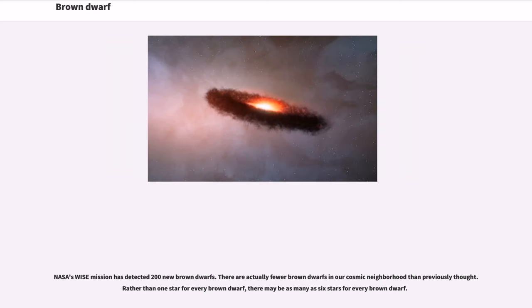NASA's WISE mission has detected 200 new brown dwarfs. There are actually fewer brown dwarfs in our cosmic neighborhood than previously thought. Rather than one star for every brown dwarf, there may be as many as six stars for every brown dwarf.